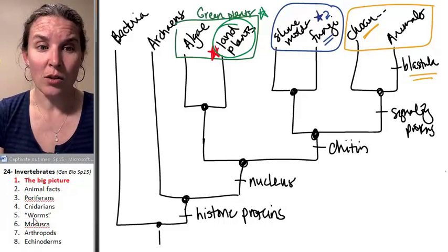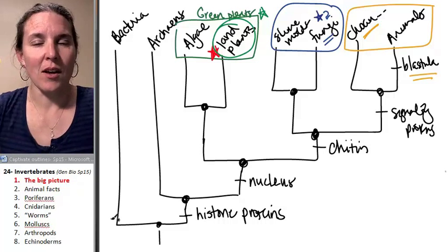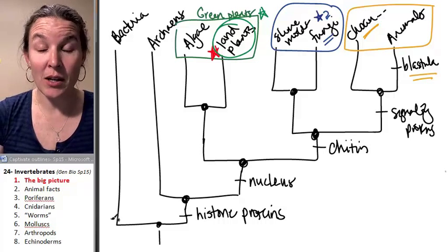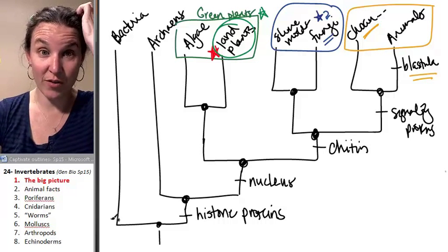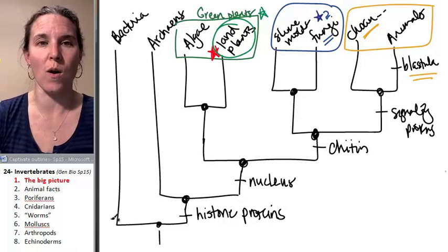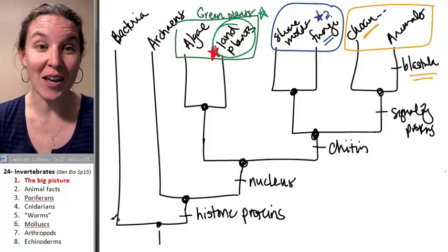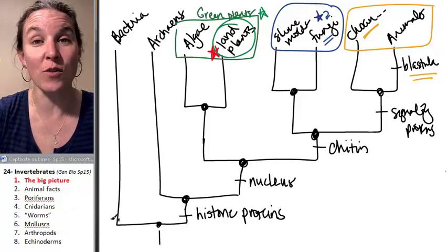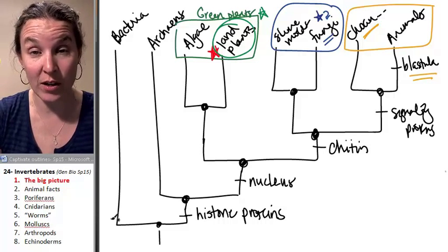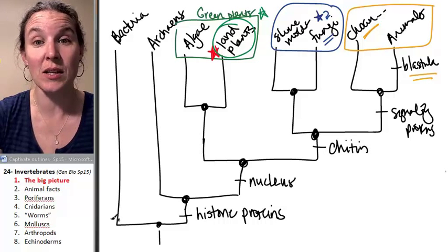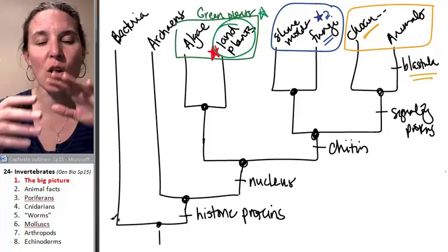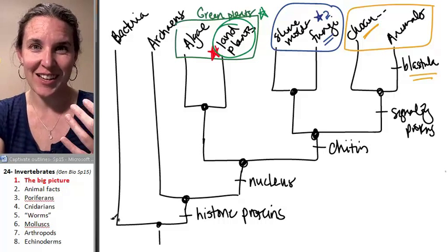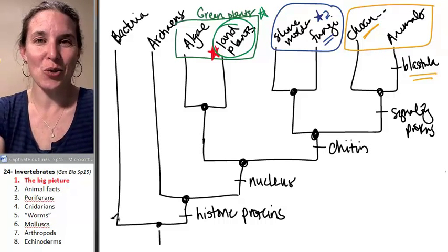Now, look, there's a whole section called worms. What you can know is that our treatment of critters is going to be unfortunately brief. We could go forever talking about all the different groups. That's an entire class. Take general zoology if you want to learn about all the different groups of organisms, different groups of animals. So, we're doing a two-lecture surface attention to animals.